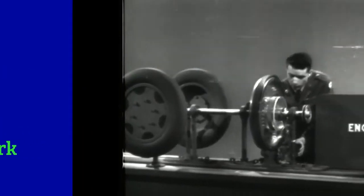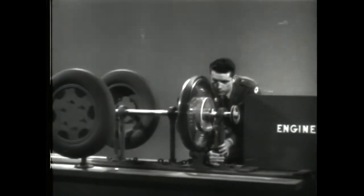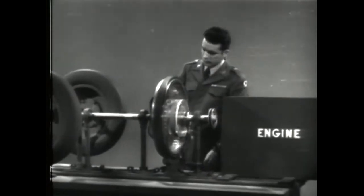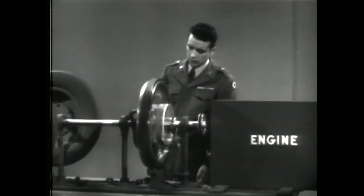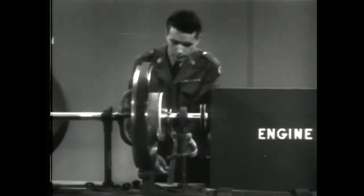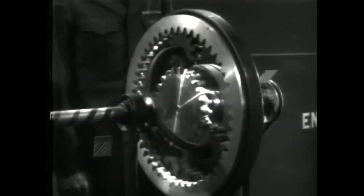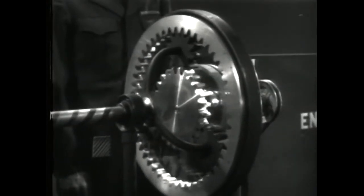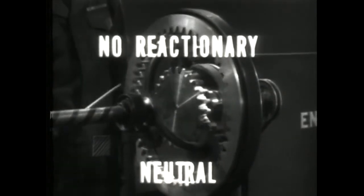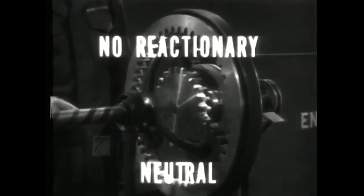Single planetary gear sets operate under certain laws, five in all, to achieve various drives on vehicles. Let's review the five laws that govern these drives. First there's neutral, governed by law number one. When there is an input and an output but no reactionary, the result is neutral.